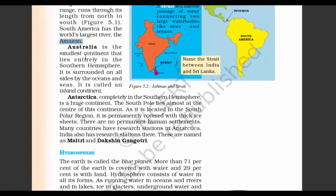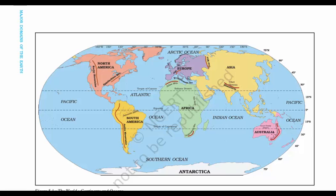Now coming to Australia — it is the smallest continent, lying entirely in the Southern Hemisphere. It is surrounded by water everywhere, and so it is also called the island continent. Australia is the only island continent.